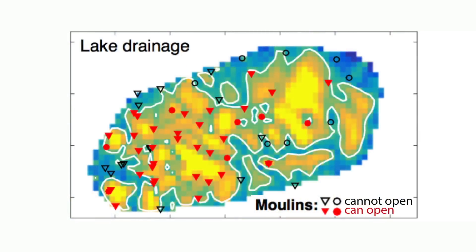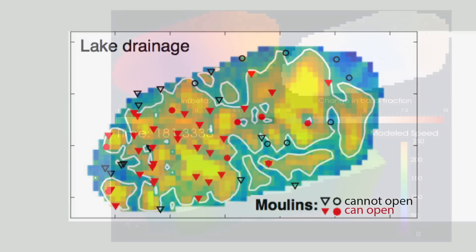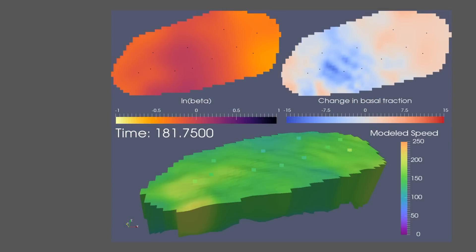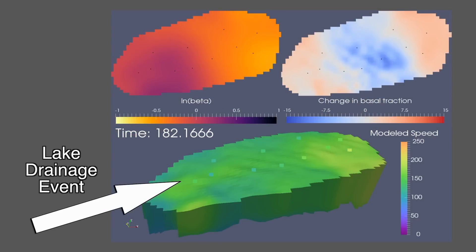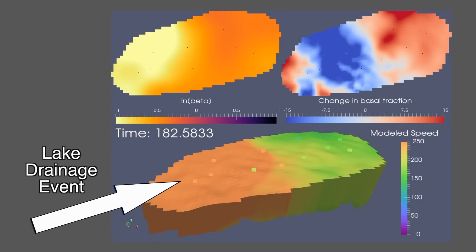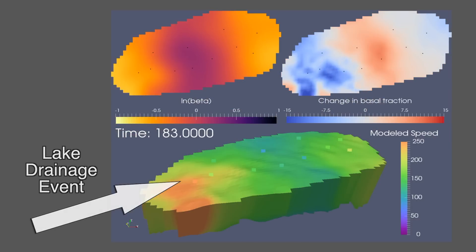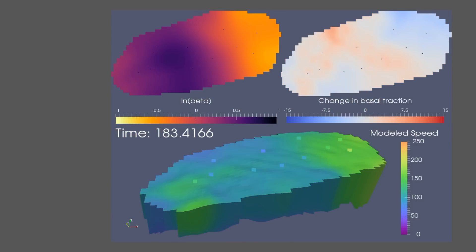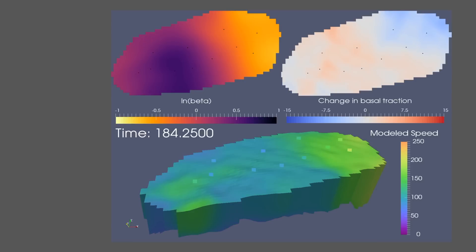However, during a brief lake drainage event that lasted only a few hours, the stresses were so great that most of the ice surface in this region was basically being pulled apart. And that would allow moulins to form pretty much everywhere.